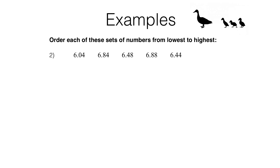In question 2 we're going to do the same thing. We'll start with the biggest place value column. In all of these numbers that is the units column, and again in all of these cases we've got the same digit — we've got six. That means we can't tell just by looking at the units column which of these is biggest and which is smallest, so we've got to look at the next place value column, which is the tenths column — the first digit after the decimal point. I'll just underline those. The smallest digit there is zero, so that means 6.04 is our smallest number.